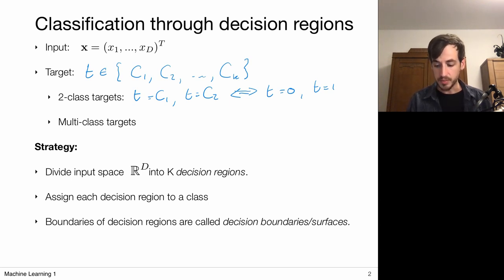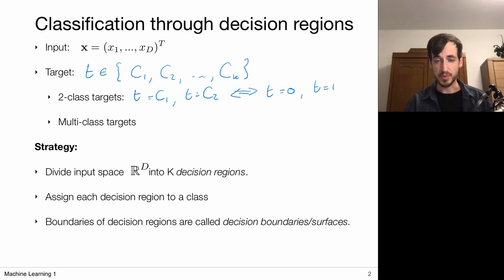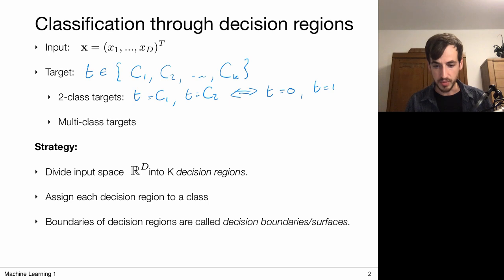But in the multi-class case, we cannot do this, because we don't have a clear ordering of these classes. It could be anything — cats, dogs, apples, pears. It's an abstract thing with no ordering, so we can no longer just assign numbers to it.